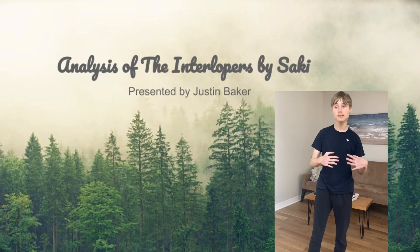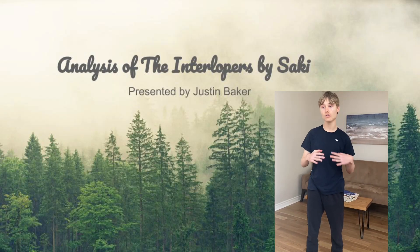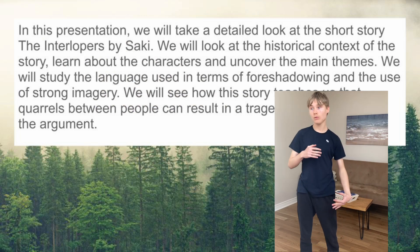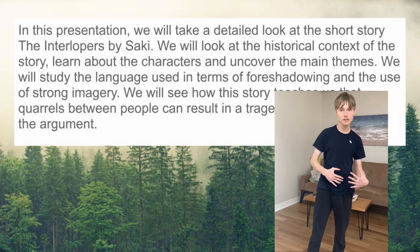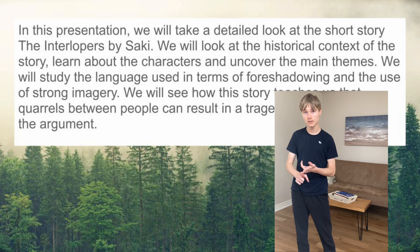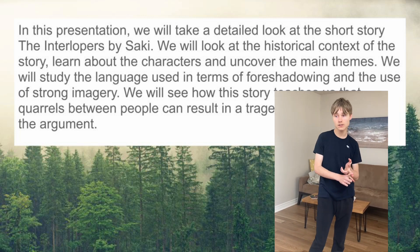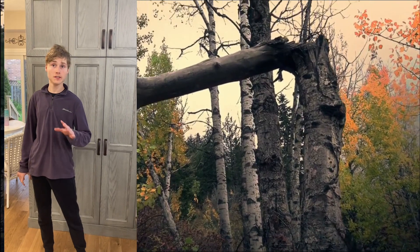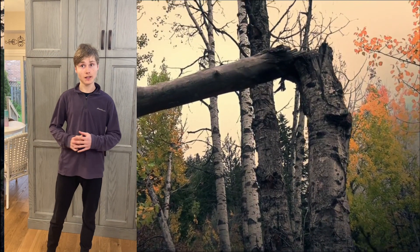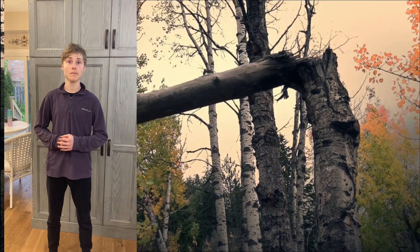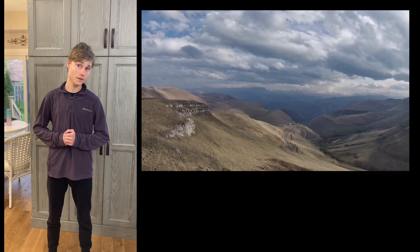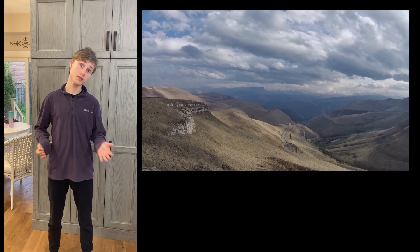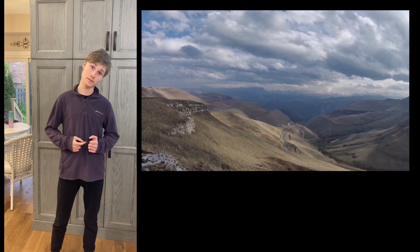In this presentation, we will be taking a detailed look at the short story called The Interlopers by Saki. We will be looking at the historical context, the themes, the main characters. We will look at foreshadowing, symbolism, and imagery, like this fallen tree behind me, or this slope. We will learn how conflict can end in tragedy for both sides.